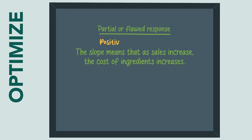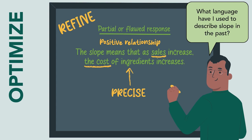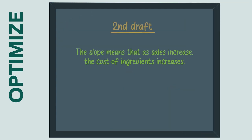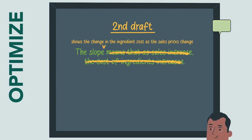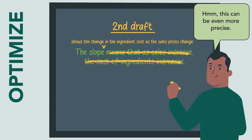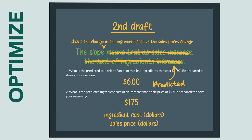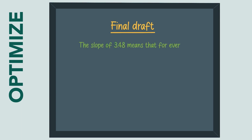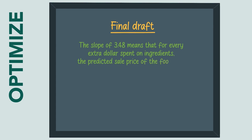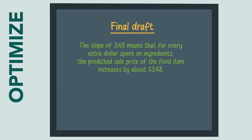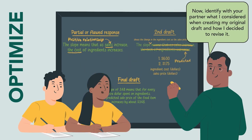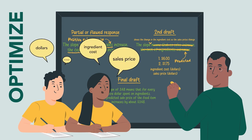For example: It's true that there is a positive relationship between cost of ingredients and sales, yet this statement can be more precise. What language have I used to describe slope in the past? Let's refine this statement that way first. Here's what I came up with: The slope shows the change in the ingredient costs as the sales prices change. Hmm, this can be even more precise. I can use the actual values I found in problems 1 and 2, as well as use specific language from the graph's axes. Also, I should use 'predicted' to communicate that the slope represents a trend in the data rather than actual observations. Let's try again: The slope of 3.48 means that for every extra dollar spent on ingredients, the predicted sales price of the food item increases by about $3.48. Now, identify with your partner what I considered when creating my original draft and how I decided to revise it. Thinking aloud like this helps students learn how to maximize their meta-awareness so they can clarify their own language use independently.